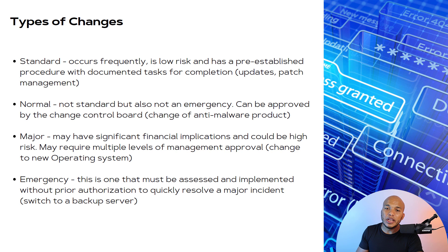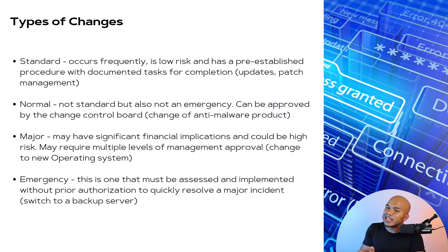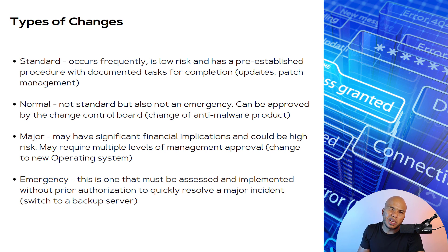We have four different types of changes. A standard change occurs frequently, is low risk, and has a pre-established procedure with documented tasks for completion — for example, typical updates and patch management. Then we have the normal change: it's not standard, but it's also not an emergency, and it can be approved by the change control board. For example, changing your anti-malware product is a normal change — it's not standard because you don't change your anti-malware every week or two.